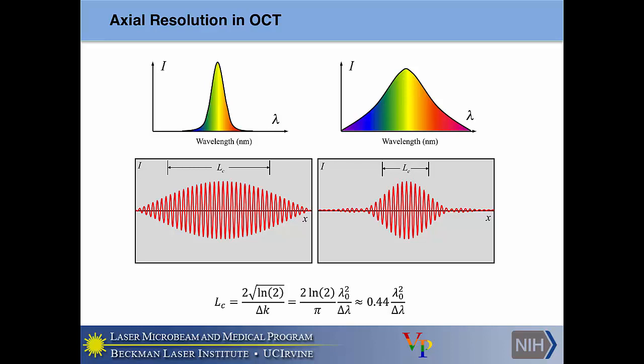Q: In the previous lecture we talked about how optical properties of tissues are wavelength dependent, and how scattering is higher at shorter wavelengths. Although you have a source with a nice Gaussian shape, if you probe with depth, the spectrum is actually changing with depth — and so the coherence length is also changing with depth. Do you have a sense of how much the coherence length is increasing with depth due to modification of the spectrum?